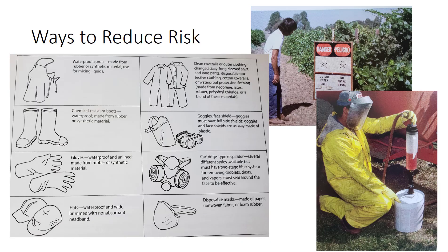Many steps can be taken to reduce the potential risk of pesticides to people. For example, closed mixing systems allow for the safe handling of toxic liquid pesticides because applicators do not have to handle open pesticide containers, thereby eliminating accidental contact. The use of water-soluble packaging also reduces the risk of exposure during mixing and loading because direct contact is eliminated.